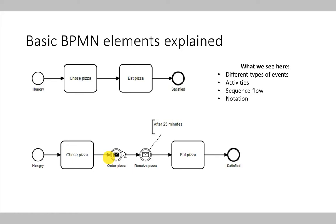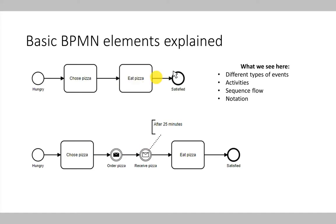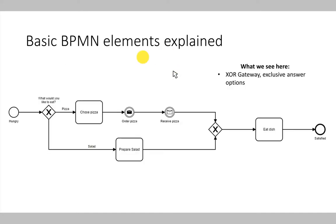For example, the black letter symbol represents information being sent, and the white letter symbol represents information being received. There is also the possibility to annotate different shape types with additional information — for example, we expect that the pizza is received after 25 minutes. These are the basic building blocks, and we can already model basic processes with them. The only limitation is that our processes are currently quite linear: we start with an event, have different activities, and end with an event. Usually we need the possibility to model different process paths.